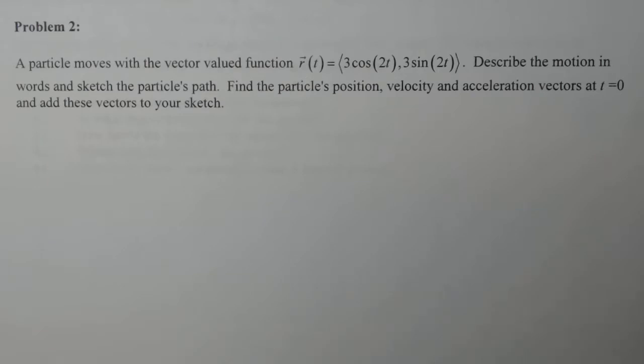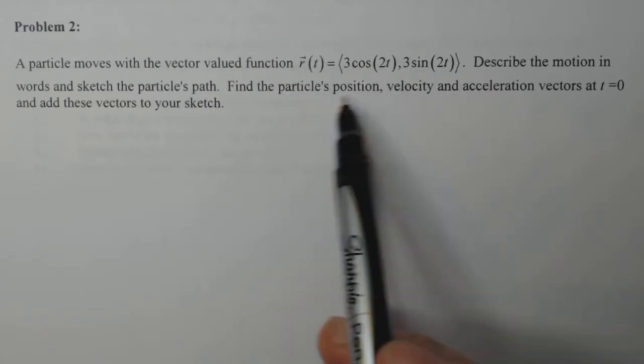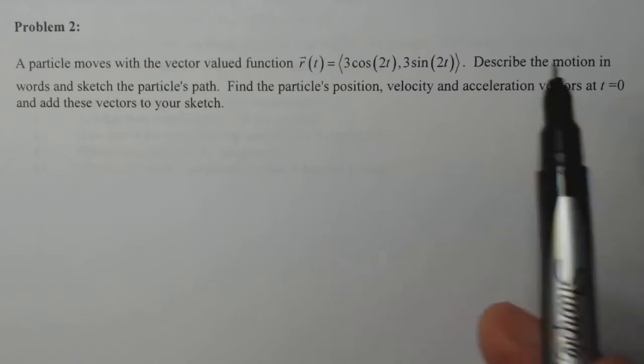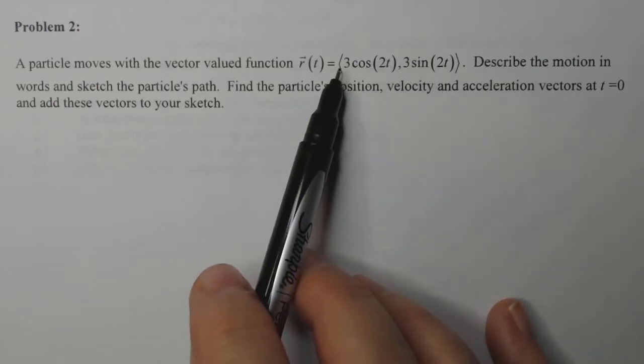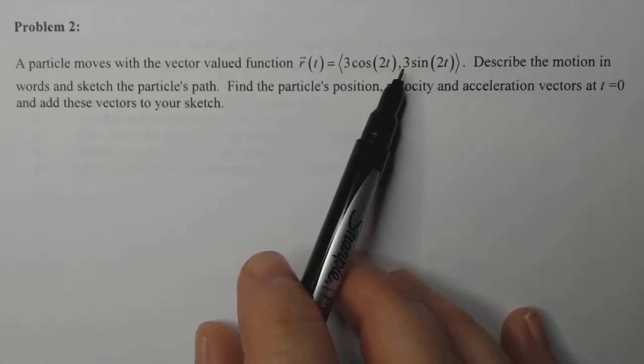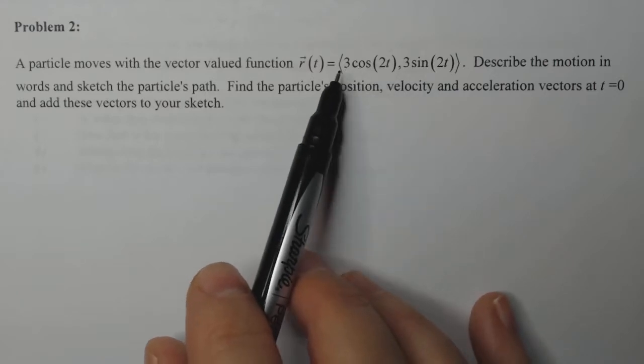Anytime you're looking at a vector valued function with cosines and sines, it's gonna be uniform circular motion. Since our coefficients are both the same, that means it's actually going to be a circle of radius three.